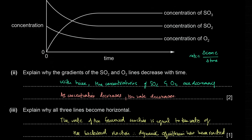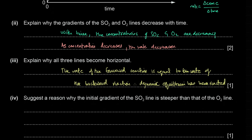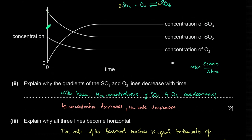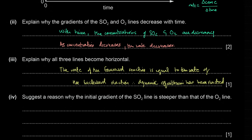The initial gradient of the SO₂ line is steeper than the O₂ line because, looking at the stoichiometry, for every one mole of O₂ consumed, two moles of SO₂ are consumed. So sulfur dioxide is consumed faster — more moles of SO₂ are consumed per unit time than oxygen.